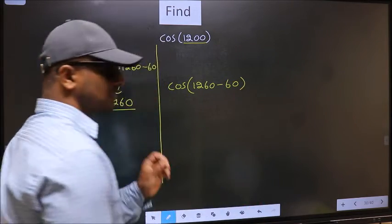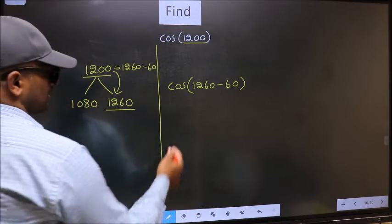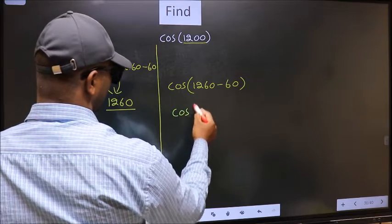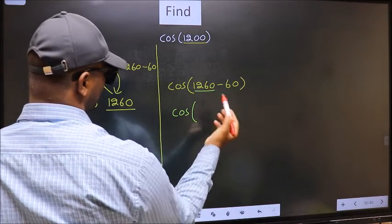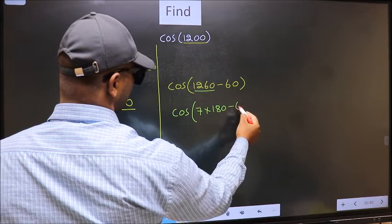This is your step one. Next, cos—in place of this, now we should write 7 into 180 minus 60.